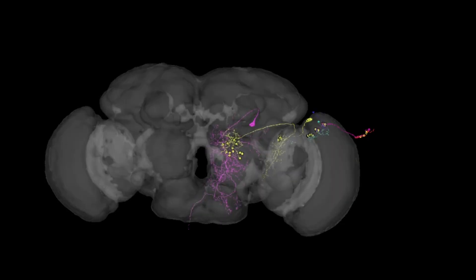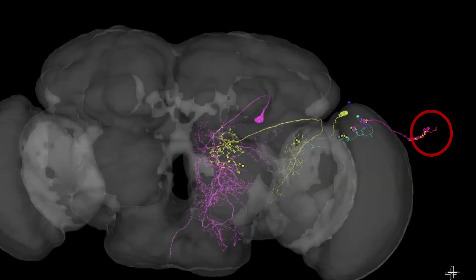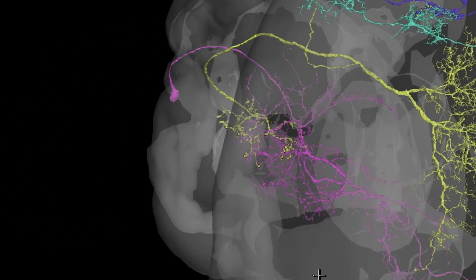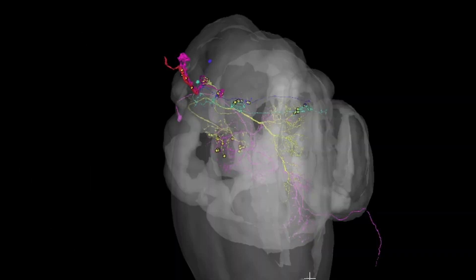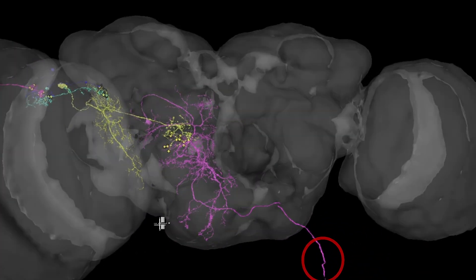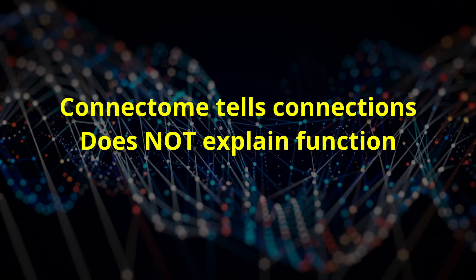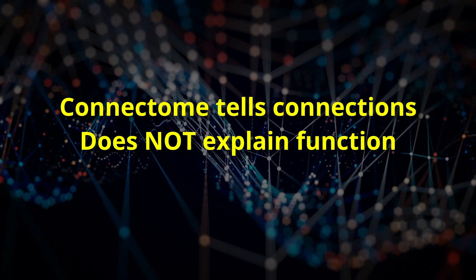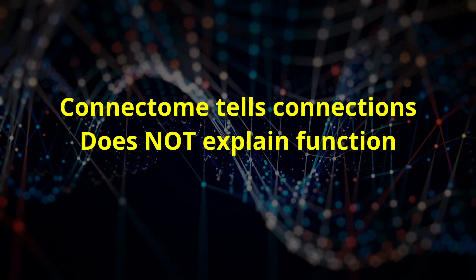A connectome can show you that an input signal — like a photoreceptor from the eye — flows through a series of connections and eventually goes to the part of the brain which causes an action. In this case, the fly turns. But it doesn't tell you what processing the brain is doing along the way.